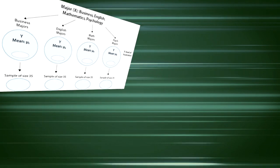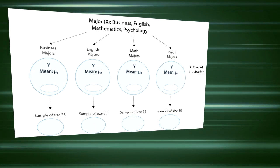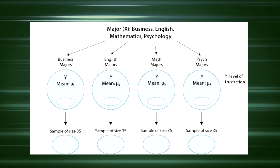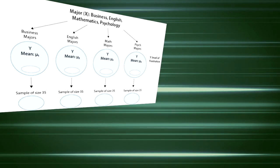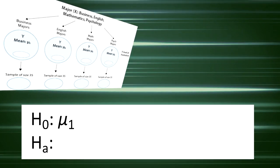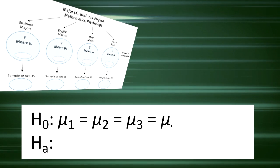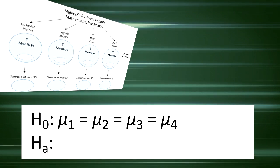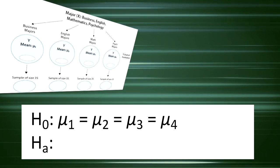The null hypothesis claims that there's no relationship between the explanatory and response variables x and y. Since the relationship is examined by comparing the means of y in the populations defined by the values of x, no relationship would signify that all the means are equal. Therefore the null hypothesis of the F-Test is population mean 1 equals population mean 2 equals population mean 3 equals population mean 4.